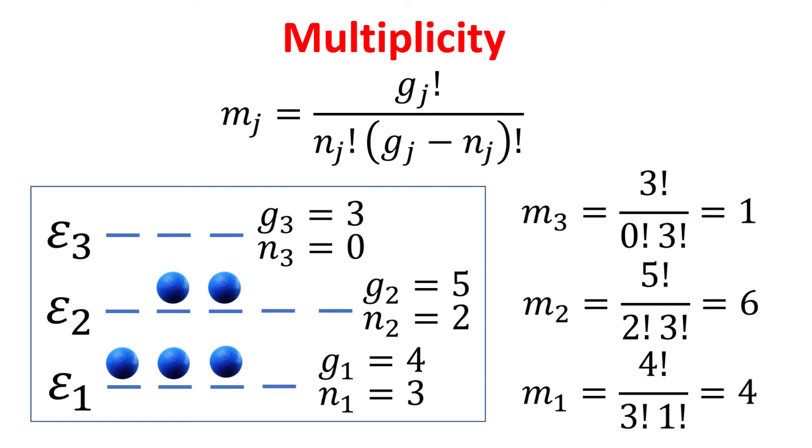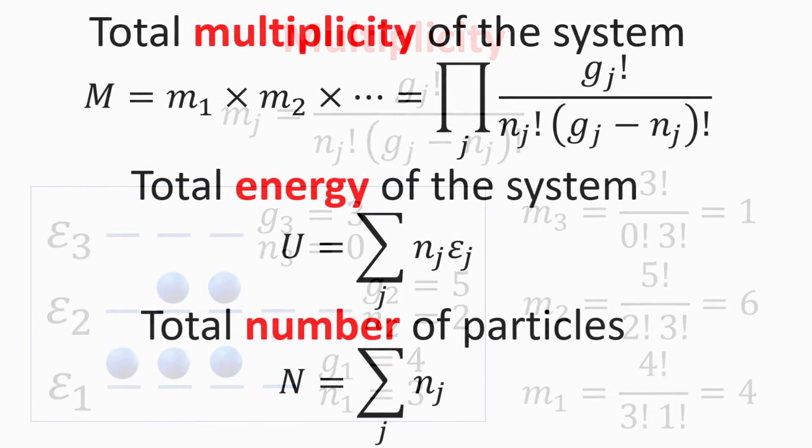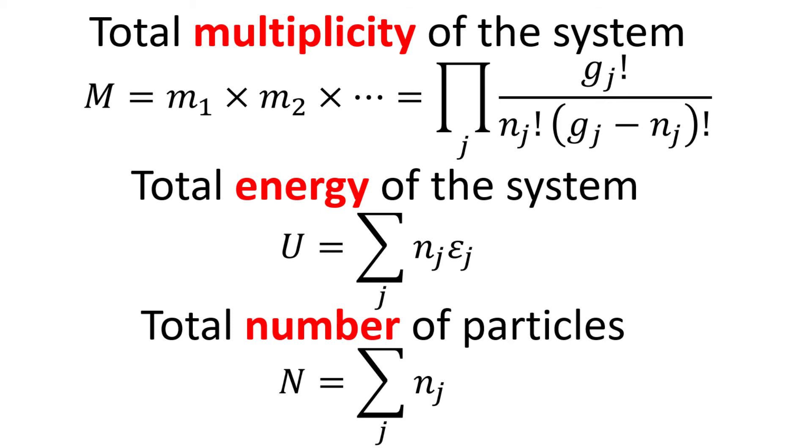Using this formula, we can easily work out the multiplicity for each energy level for the system on the left, with the particular distributions of electrons n1 equals 3, n2 equals 2 and n3 equals 0. The total multiplicity m of the system would then be the product of the individual multiplicity of all the energy levels. The total energy of the system U would be the product of the energy and the number of electrons at that energy level, summed over all energy levels. Lastly, the total number of electrons is constrained to be N.